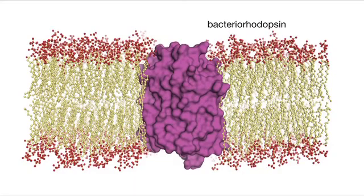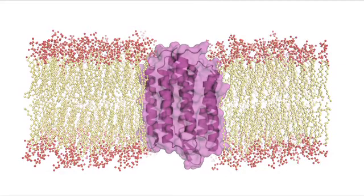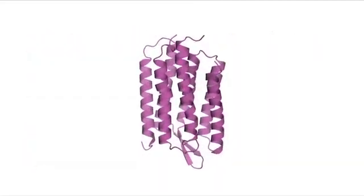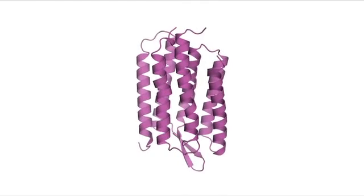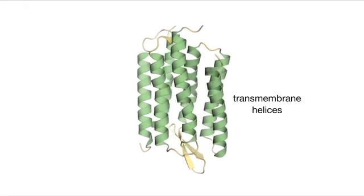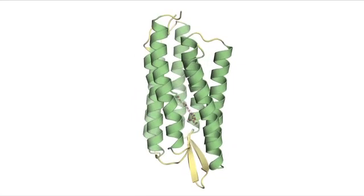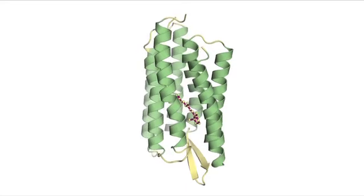Bacteriorhodopsin is an abundant light-driven proton pump found in the membrane of Halobacter halobium, a purple archaeon that lives in salt marshes in the San Francisco Bay Area. It is a multi-pass membrane protein that traverses the plasma membrane with seven long alpha helices. The helices surround a chromophore, retinal, that is covalently attached to the polypeptide chain and gives the protein and cells their characteristic purple color.